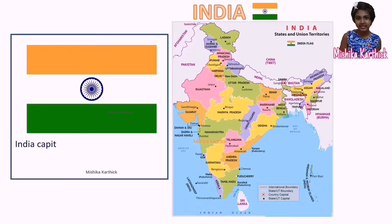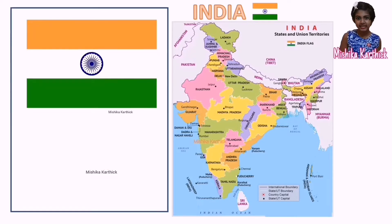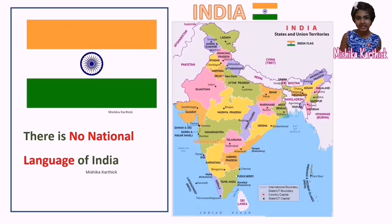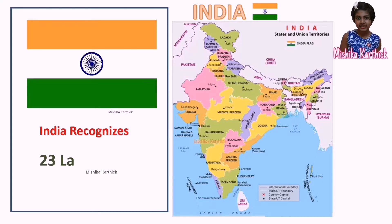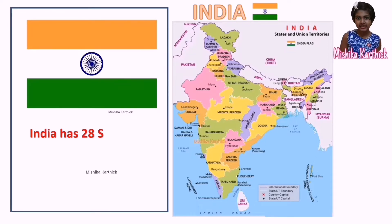India's capital is New Delhi and India's official language is English and Hindi. There is no national language of India, but India recognizes 23 languages that people speak in various states. India has 28 states and 9 union territories.